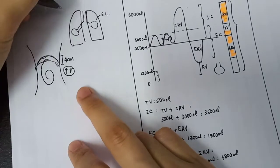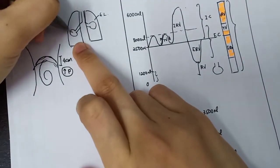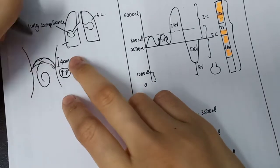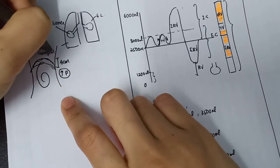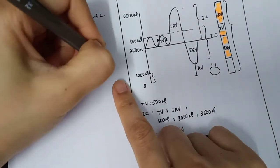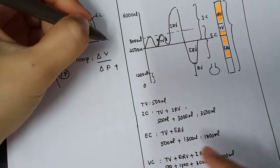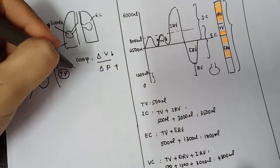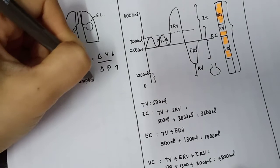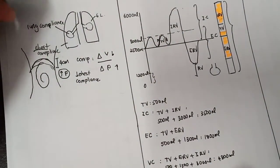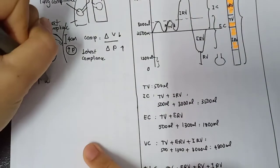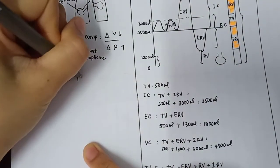There are two things that differ: the first is lung compliance, which is transpulmonary alveolar compliance, and we also have chest compliance. Compliance is volume divided by pressure. Since we have an increase in pressure and a reduction in volume, there is a reduction in chest compliance, but lung compliance remains the same. Our body needs to adapt because oxygen demand during pregnancy is increased by about 20%.